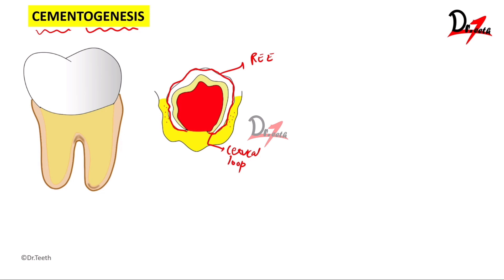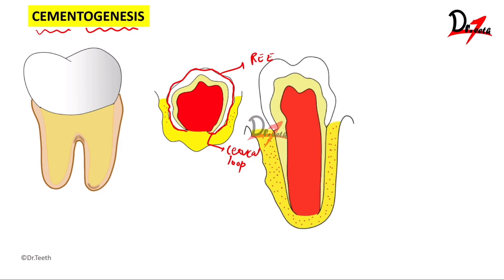The cervical loop will slowly proliferate and it will give rise to the Hertwig's epithelial root sheath. From this cervical area, the cervical loop slowly proliferates apically and forms the Hertwig's epithelial root sheath, or HERS. This Hertwig's epithelial root sheath will slowly proliferate towards the apical aspect and forms a mold into which root dentin formation occurs.